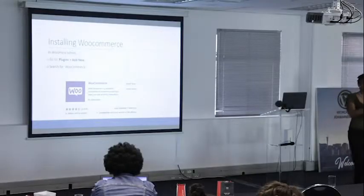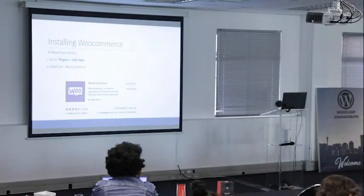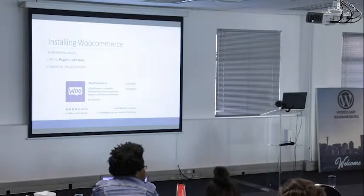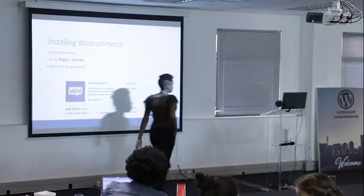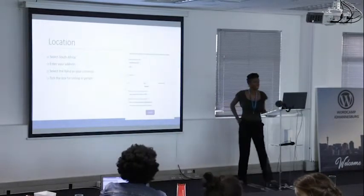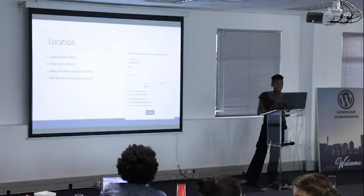If you already had WooCommerce installed before, go to Settings, then Advanced, and check Help — you'll be able to run the setup wizard again. Once WooCommerce is installed, the first step is going to ask us for location details. We enter our country and our address.